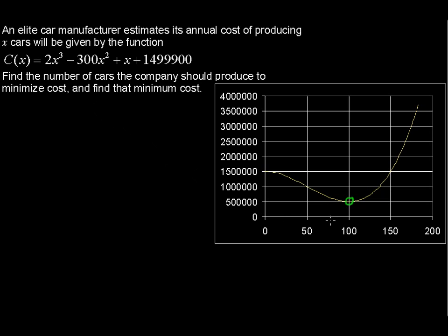So we see the minimum and it looks like it occurs at x equals 100. Well, x equals the number of cars. So this example is really just about not getting x and y mixed up. Reading the problem and making sure you know what x and y stand for.